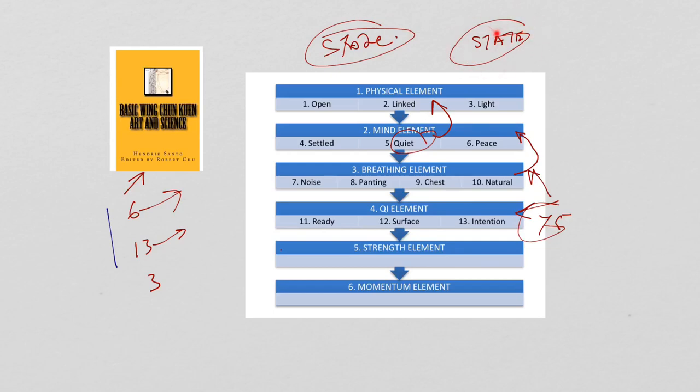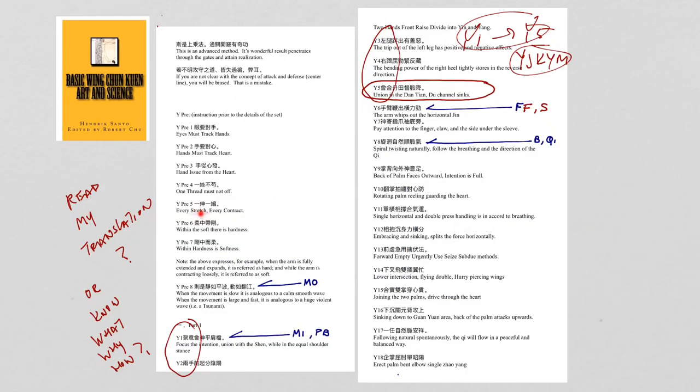One needs to know exactly what happened, otherwise one has no idea how to do it. And that's why in the basic Wing Chun Art and Science, the six core element, you have this six core element here, and then you have the 13 states. Now this 13 state here, one must know it clearly and experience it in order to be able to understand what the heck is going on.